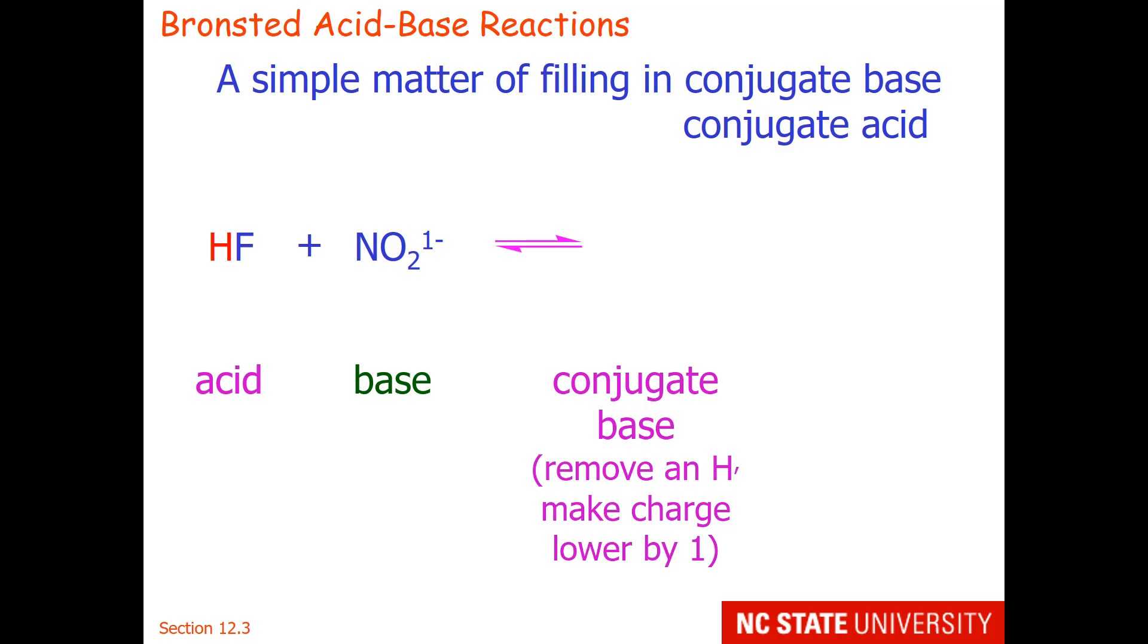So to write the net reaction, we just need to take our acid and write the conjugate base, which means we're going to deprotonate or remove a hydrogen atom and make the charge lower by 1. So hydrofluoric acid becomes fluoride. For the base, we simply need to write the conjugate acid, which means we protonate or add a hydrogen atom and make the charge greater by 1. So nitrite becomes nitrous acid.